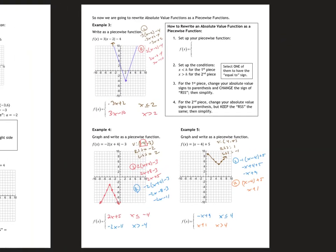Getting used to rewriting an absolute value as a piecewise function is important because it is two lines joined at the vertex. Remember: the x-value of the vertex is your restriction. To get the left side, change the sign of your a-term and multiply out. For the right side, keep it as is and simplify. Hope this helps — if you have questions, let me know. Enjoy your practice and I'll talk to you soon.